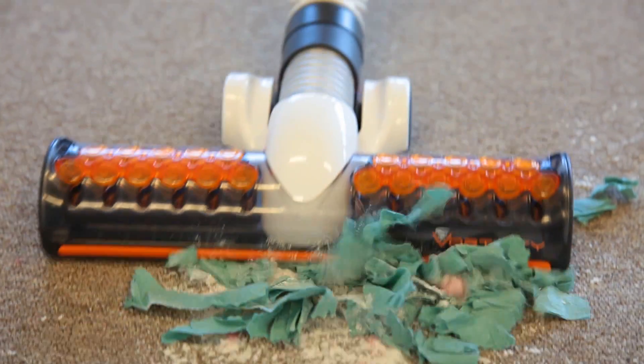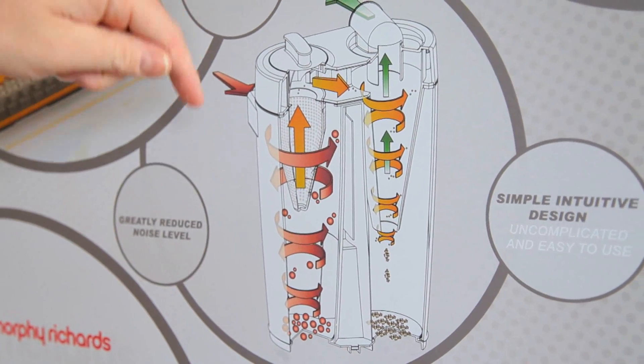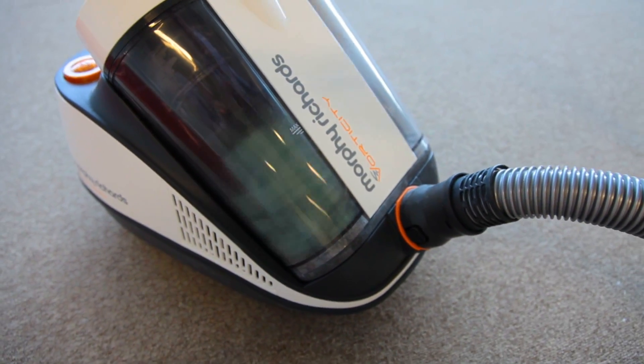Basically air and your dust, rice crispies, all come into the product via the red arrow here. They'll then spin around in this chamber and settle towards the bottom of the chamber.